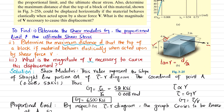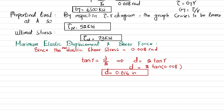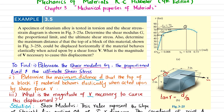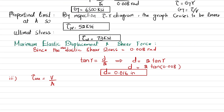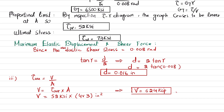Now we find the shear force V that will cause this displacement d. We know that average shear stress equals shear force divided by shear area. In the elastic region, the maximum shear stress is 52 ksi, and the area over which it acts is 3 multiplied by 4 inches squared. Therefore, V equals average shear stress times area: V equals 52 ksi multiplied by 4 times 3 inch squared, giving a shear force V equal to 624 kips. This 624 kips shear force is necessary to produce a displacement d of 0.016 inches.